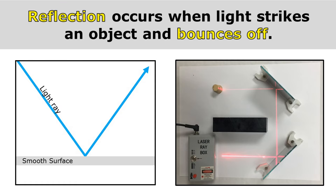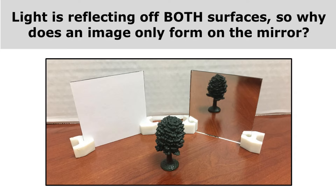Reflection occurs when light strikes an object and bounces off. Here you can see light rays reflecting off these surfaces. We have a toy tree in front of a white square and in front of a mirror. Now light is reflecting off both surfaces — so why does an image only form on the mirror?